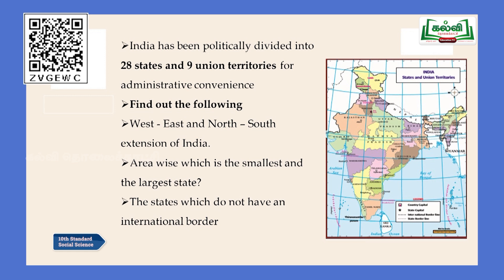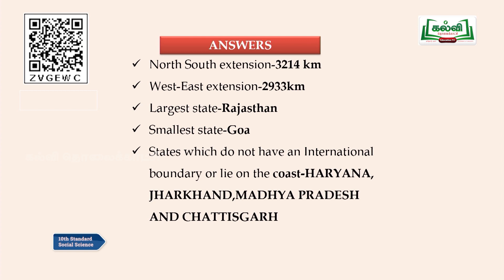The answers: the north-south extension is 3,214 kilometers, the west-east extension is 2,933 kilometers. The largest state in India is Rajasthan whereas the smallest state in India is Goa. The states which do not have an international boundary or lie on the coast are Haryana, Jharkhand, Madhya Pradesh, and Chhattisgarh.